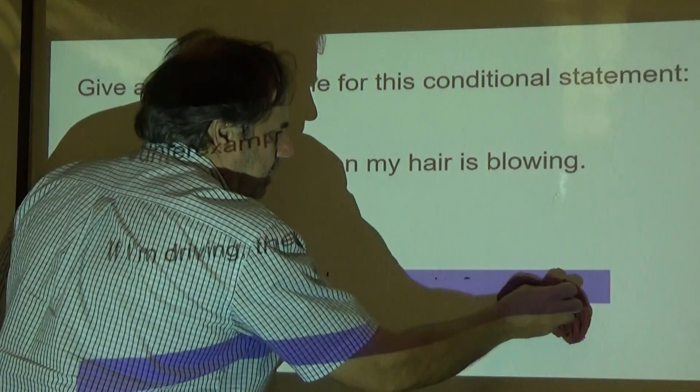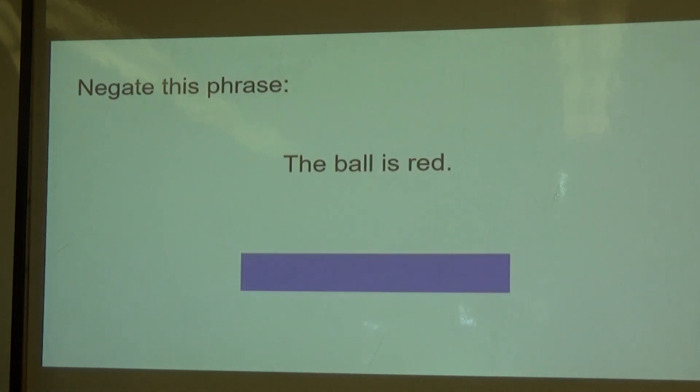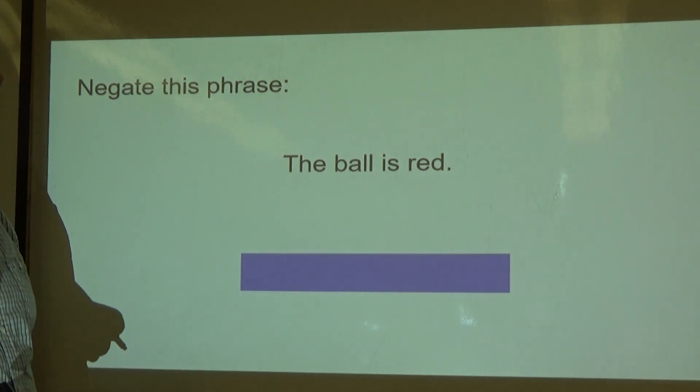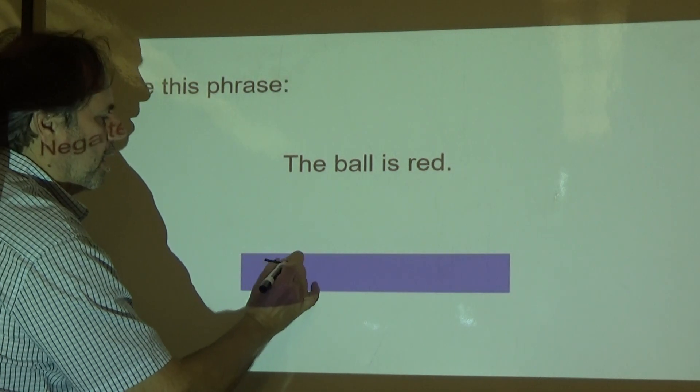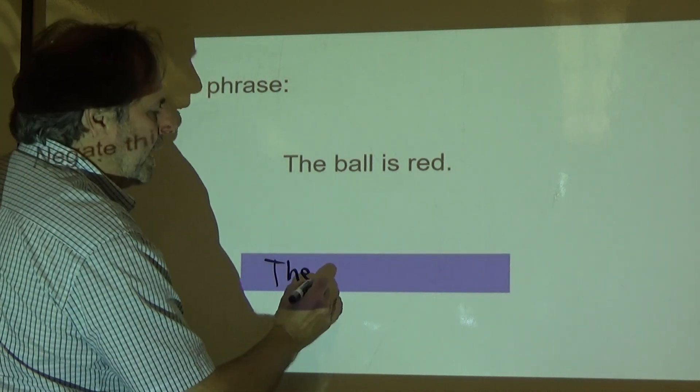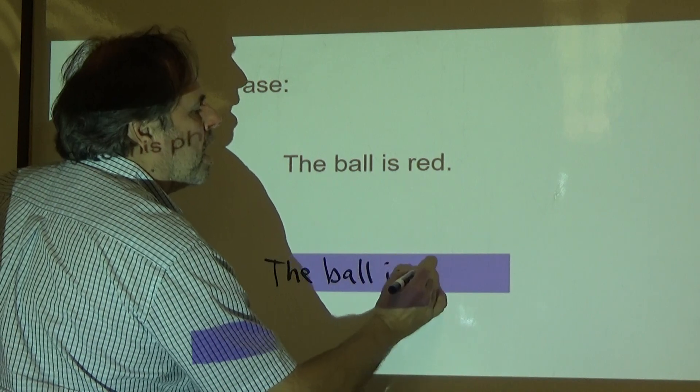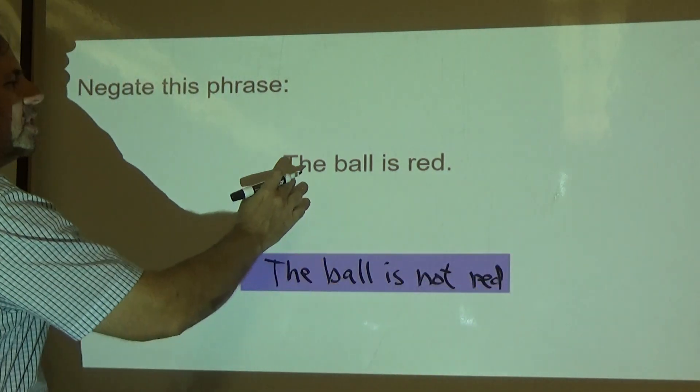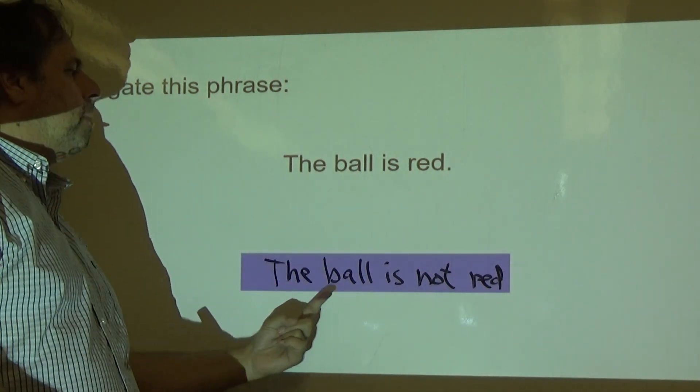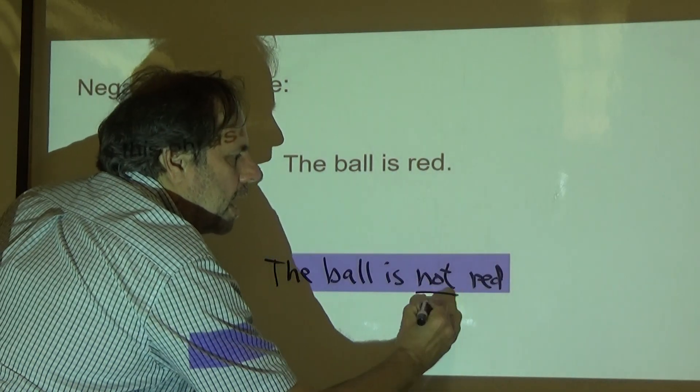All right. This one here. Negate this phrase: the ball is red. Negate means just to say the opposite. What word do we use to negate? The ball is not red. So the negation of this statement, the ball is red, is the ball is not red. We use the word not.